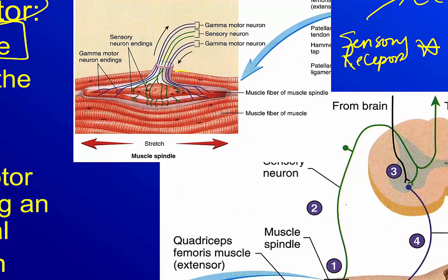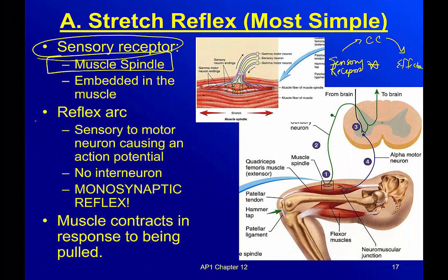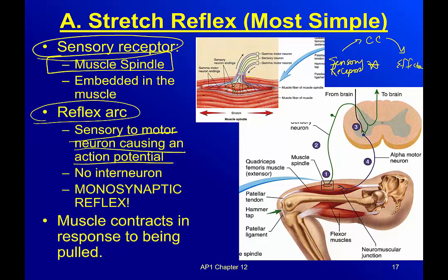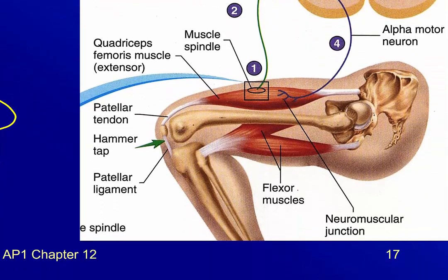This is actually embedded in the skeletal muscle of our quadricep. This is our sensory neuron. The reflex arc goes sensory to motor neuron, causing an action potential. Notice that I said nothing about an interneuron. Remember I told you we have monosynaptic reflexes? This is one of those. There is no interneuron in this specific reflex, so it's monosynaptic. The muscle contracts basically in response to being pulled. So this is when your doctor hits your knee with a mallet.